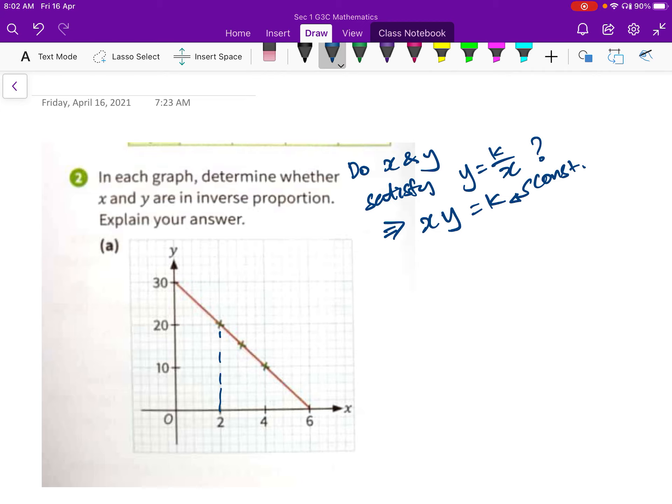We get them from the coordinates. So when X equals to 2, Y equals to 20. First set, X times Y equals to 2 times 20, which is 40. That is the constant, but I need to check for the other values of X times Y. The moment I have one set of another set of X times Y not equal to 40, I can conclude already. Because if they are inversely proportional, all the X times Y must be constant.